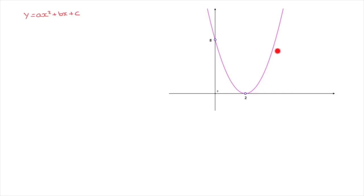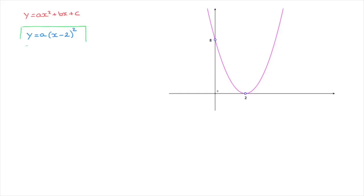Looking at this parabola, it touches the x-axis in one point only, and that's the point at which x equals 2. When this happens, the theory behind root factoring allows us to state the following: this parabola's equation, y equals ax squared plus bx plus c, can be rewritten as y equals a times (x minus 2) squared. This 2 inside the parentheses is the x-value at which the curve touches the x-axis. Writing the equation this way is known as the root factored form.